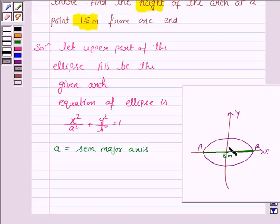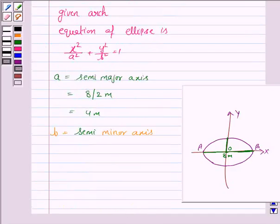So half of this, that is the semi-major axis, is 4 meter, that is 8 by 2, that is 4 meter. And b is the semi-minor axis, and we are given that it is 2 meter high from the center, so it is 2 meter.